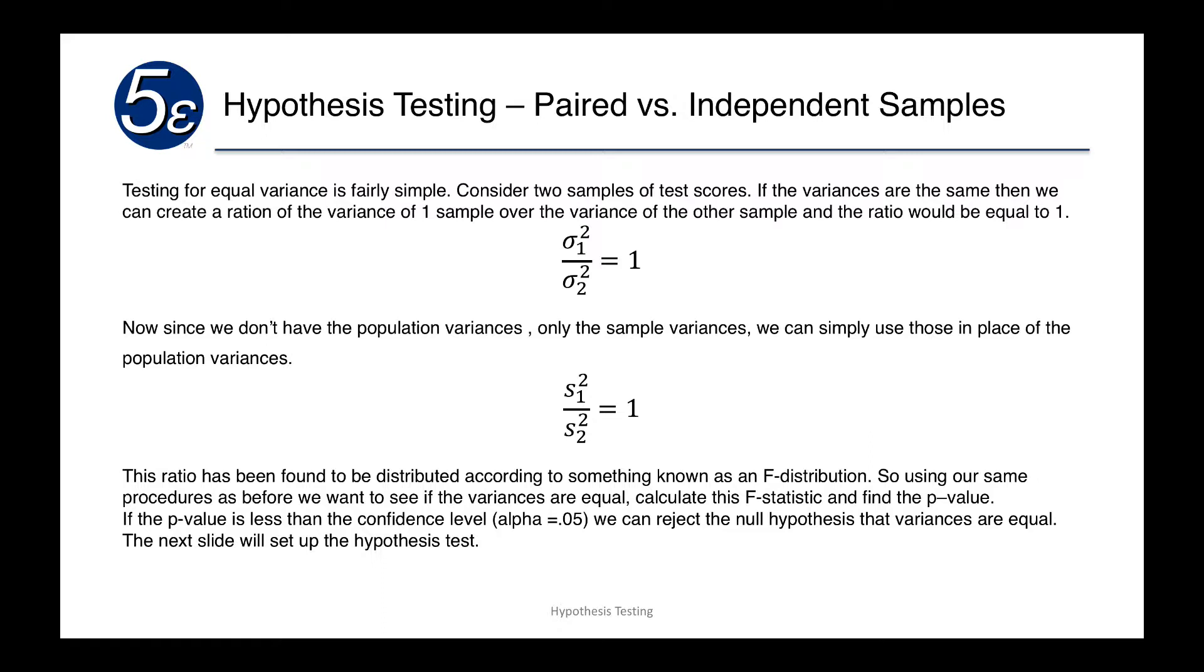Now, since we don't have population variances, we don't know the exact population variance of the two curves, we could only use the sample variances. But again, the same holds. We could take the first sample variance divided by the second sample variance, and it should be equal to one.